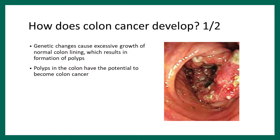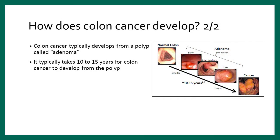How does cancer develop? There is a genetic change that causes excessive growth of the inner lining of the colon. The inner lining constantly gets changed — one set of genes puts on new lining, the other removes the old lining. When one of these doesn't work properly, excessive growth of tissue occurs, and we call that a polyp. Polyps are the ones that can potentially become colon cancer. Over 10–15 years, a polyp gradually grows to become cancerous.